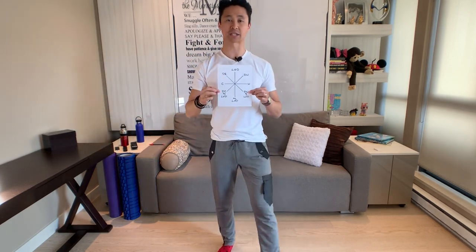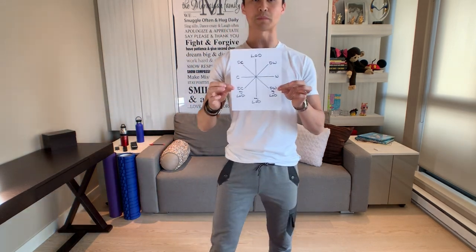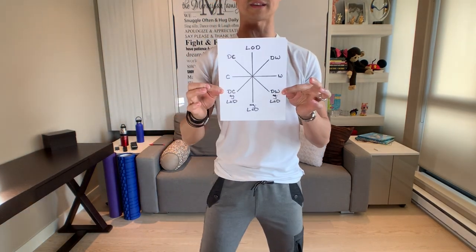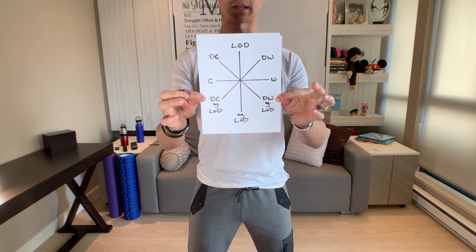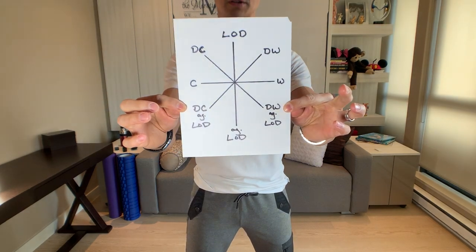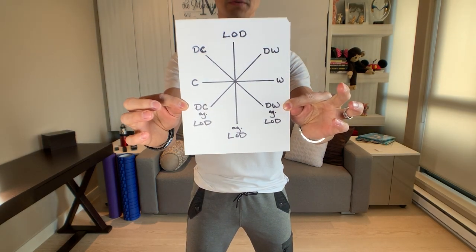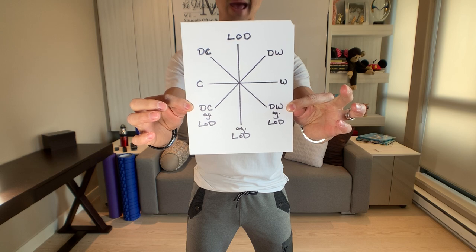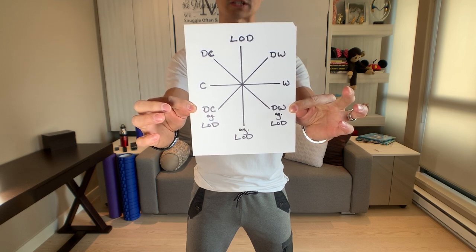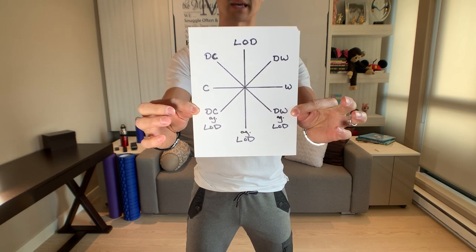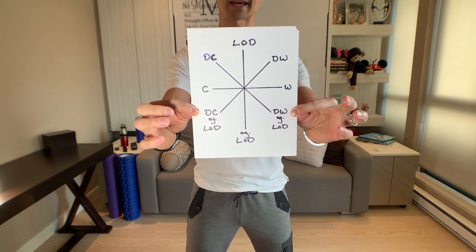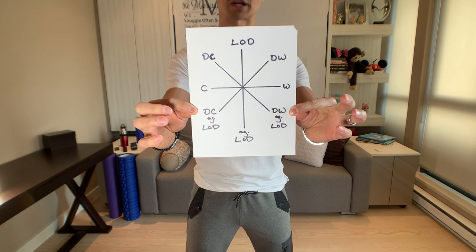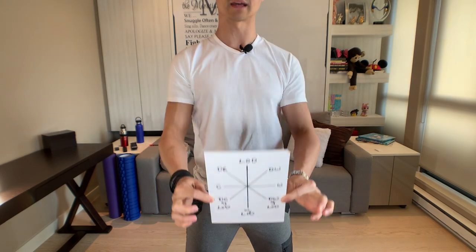Beginners, my expectation is for you to pause this video. Let's see if we can get that perfectly into view. Pause the video right now and copy what you see on the screen. It should look like a compass and we're gonna call this the dancer's compass.